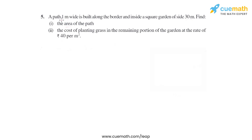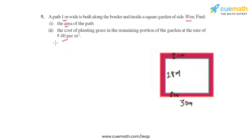Question 5 of this exercise says: a path 1 meter wide is built along the border and inside a square garden of side 30 meters. Find the area of the path and the cost of planting grass in the remaining portion of the garden at the rate of rupees 40 per square meter.